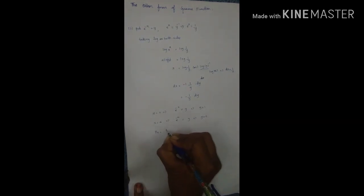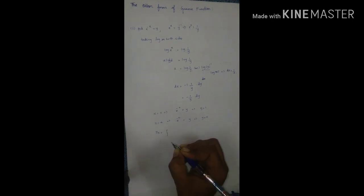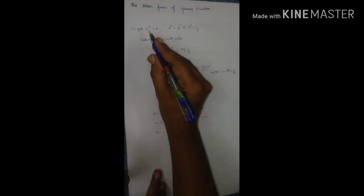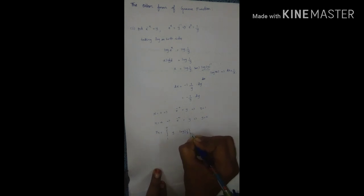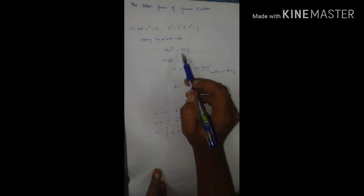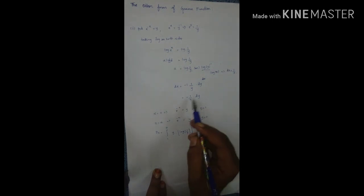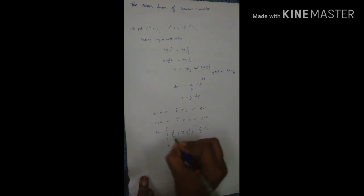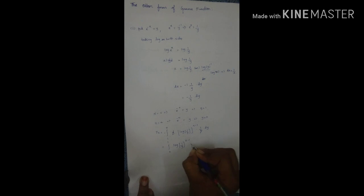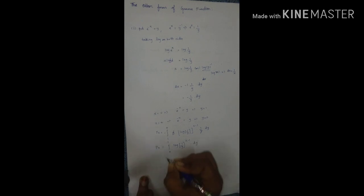Applying the formula, gamma n equals the integral with limits 1 to 0 of e to the power of minus x times y, times log of 1 by y to the power of n minus 1, dx. Substituting dx equals minus 1 by y dy and interchanging the limits to remove the minus sign, the limits become 0 to 1. The y terms cancel, giving the integral from 0 to 1 of log of 1 by y to the power of n minus 1 dy. Therefore gamma n equals this integral. This is the second form.